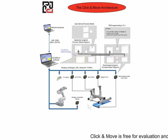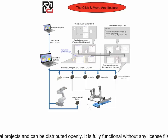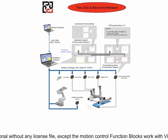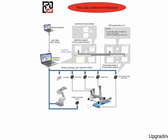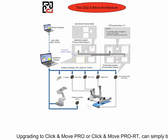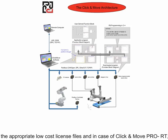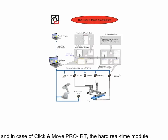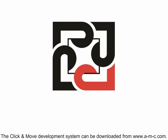Click & Move is free for evaluation in educational projects and can be distributed openly. It is fully functional without any license file, except the motion control function blocks work with virtual axes only. Upgrading to Click & Move Pro or Click & Move Pro RT can simply be done by installing the appropriate low-cost license files and, in case of Click & Move Pro RT, the hard real-time module. The Click & Move development system can be downloaded from www.a-m-c.com.